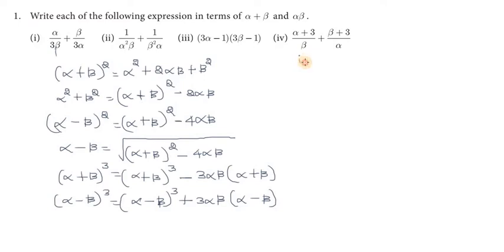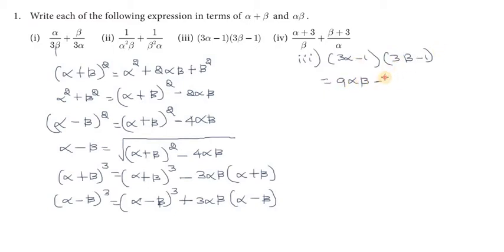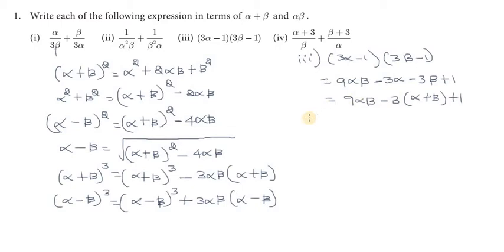Third problem: 3 alpha minus 1 multiplied by 3 beta minus 1. We multiply: 3 alpha into 3 beta gives 9 alpha beta. Then 3 alpha into minus 1 is minus 3 alpha. Then minus 1 into 3 beta is minus 3 beta. Then minus 1 into minus 1 is plus 1. So the answer is 9 alpha beta minus 3 into alpha plus beta plus 1.